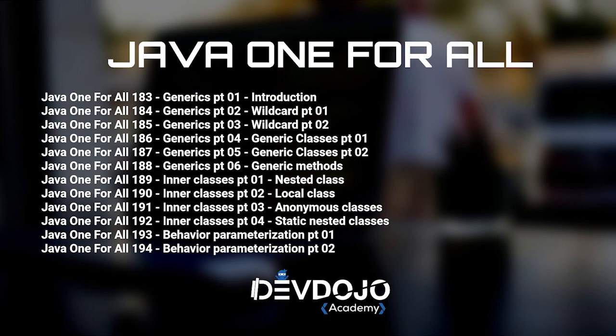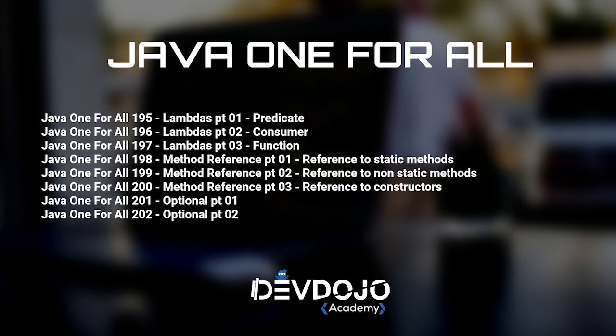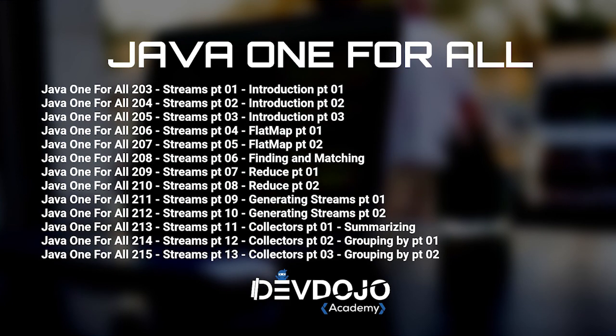And then we talk about generics. If you want to work with Java and understand how frameworks work, it's extremely important that you understand the generics concept and why it was introduced in Java. Then we are going to talk about inner classes, and then functional programming: behavior parameterization, lambdas, method references, optionals, and streams — things introduced in Java 8 that are a real game changer.